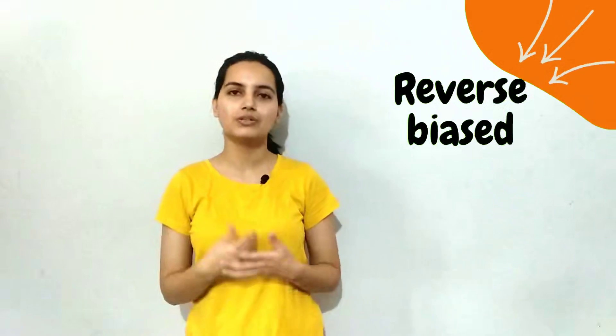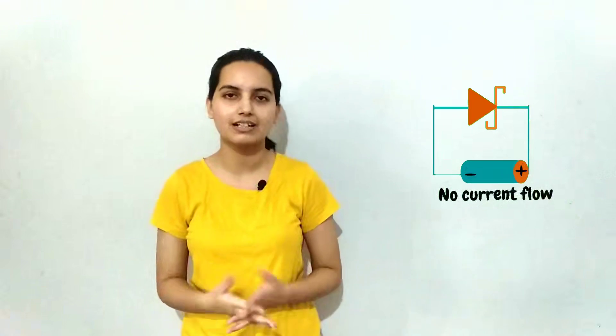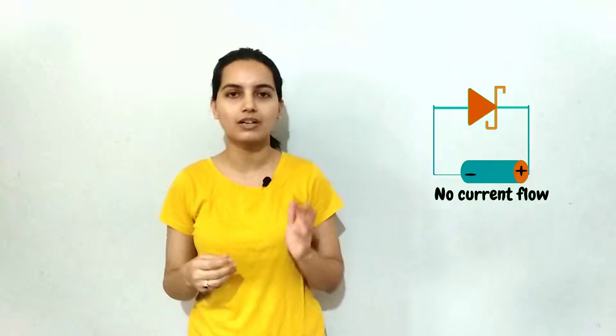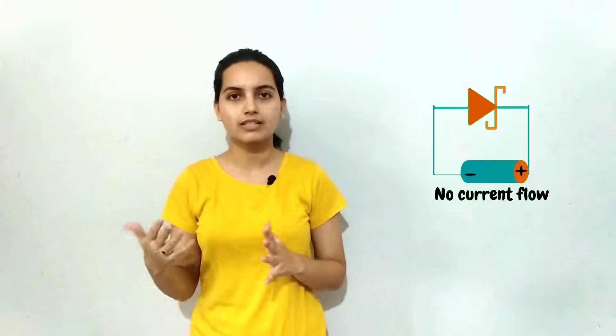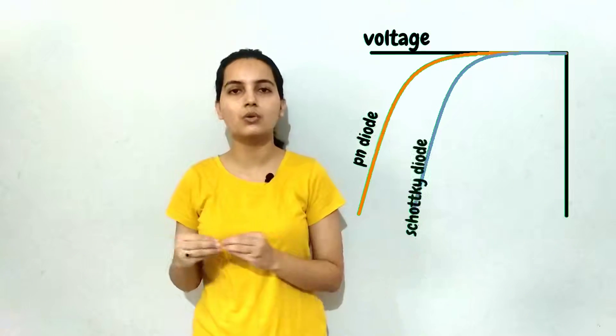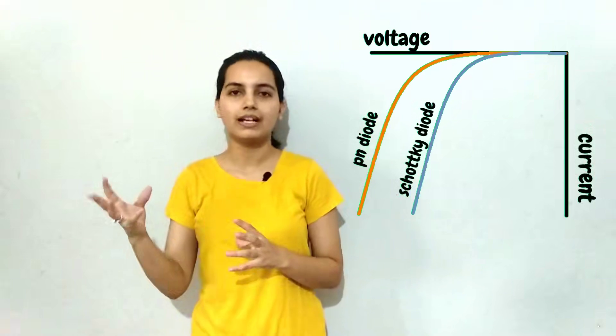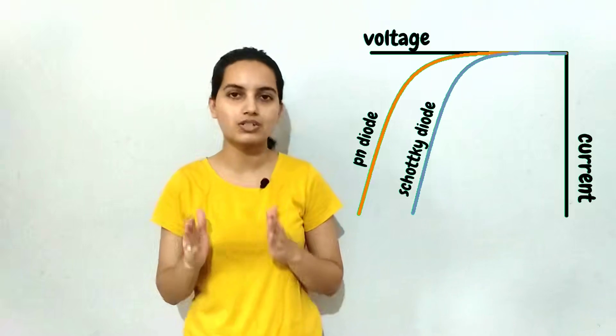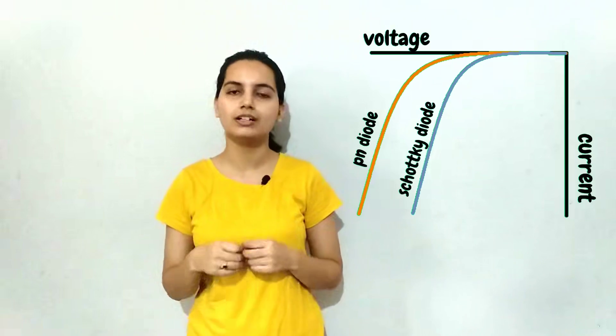Now coming to reverse bias: if we connect the Schottky diode in reverse bias, it means the metal terminal is connected to the negative terminal and the N region to the positive terminal of the battery. Because the N region is connected to the positive terminal, it will repel electrons, causing more electrons to accumulate in the depletion region of the metal layer. In the N region, the minority charge carriers — the holes — will move into the depletion region. This causes the covalent bonds in the N region to break and positive charges accumulate, forming a large depletion region, which makes current flow very difficult.